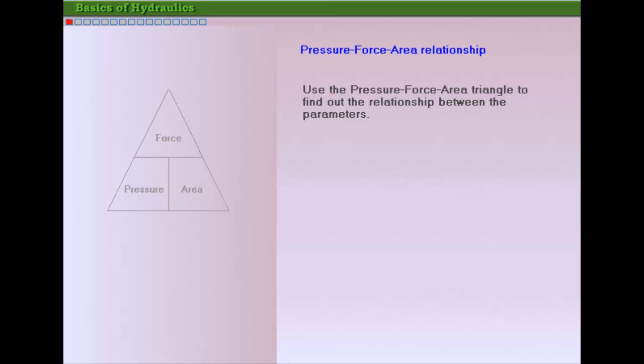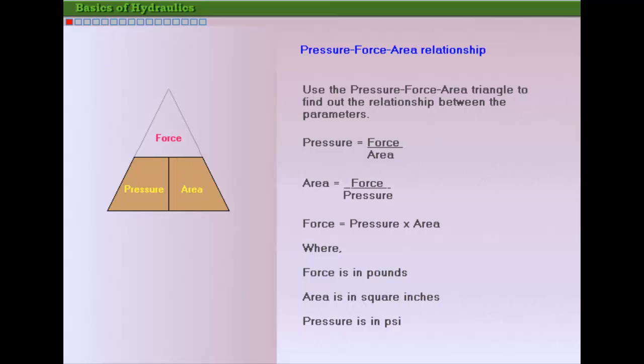This can be easily understood by using the pressure force area triangle shown in the figure. When pressure is unknown, it is calculated as force divided by area. Similarly, when area is not known, it is calculated as force divided by pressure. When both pressure and area are known, force is equal to pressure times area.